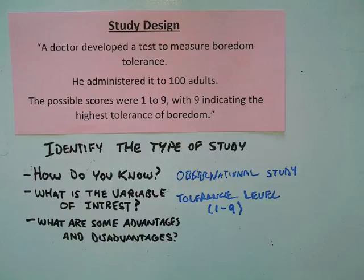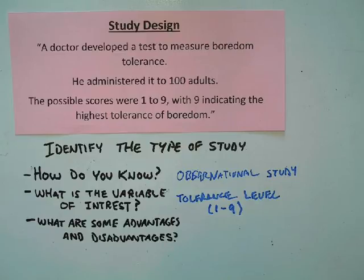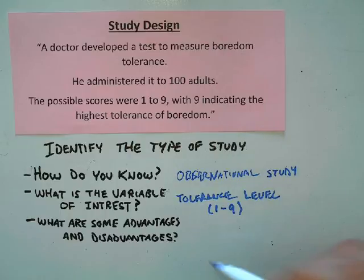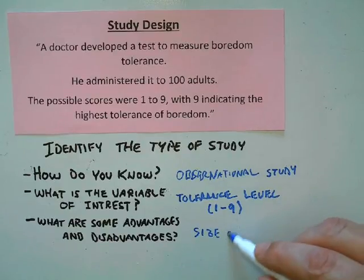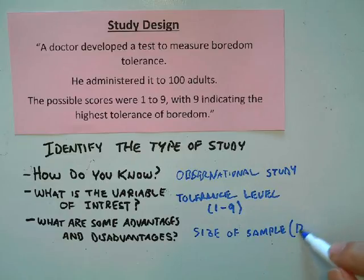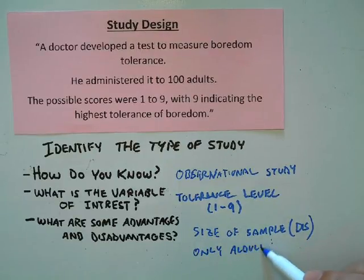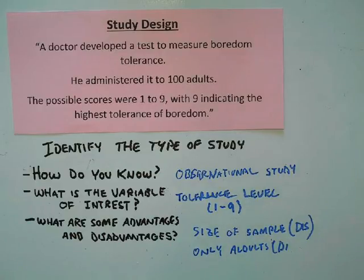What are the advantages and disadvantages of this study? They didn't go into much detail about what the test involved, so it's hard to determine if it's a good or bad test. They didn't really say how they were arriving at a score of one to nine either. My first thought is that the size of the sample — only 100 adults — is a disadvantage, since it's unclear what conclusions you can draw from such a small sample. Also, the study only includes adults, when children might have a different level of boredom tolerance.